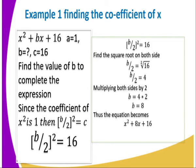Since the coefficient of x² is one, then [b/2]² = c. I have the value of c, so I can solve from there. Find the square root on both sides: b/2 = √16 = 4. Multiply both sides by two: b = 8. Thus, the equation becomes x² + 8x + 16.